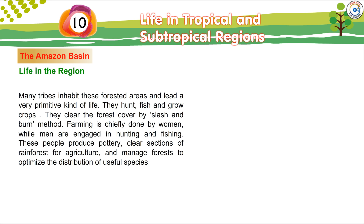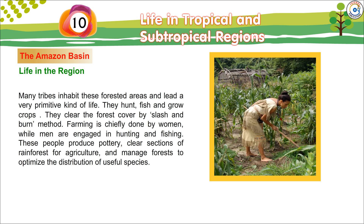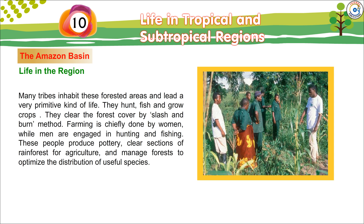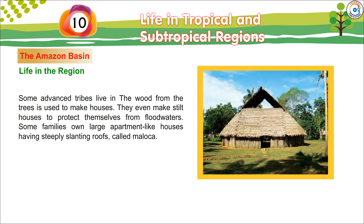Many tribes inhabit these forested areas and lead a very primitive kind of life. They hunt, fish, and grow crops. They clear the forest cover by the slash-and-burn method. Farming is chiefly done by women while men are engaged in hunting and fishing. These people produce pottery, clear sections of rainforest for agriculture, and manage forests to optimize the distribution of useful species. Some advanced tribes live in small villages and build huts with thatched roofs. The wood from the trees is used to make houses, and they even make stilt houses to protect themselves from floodwaters.